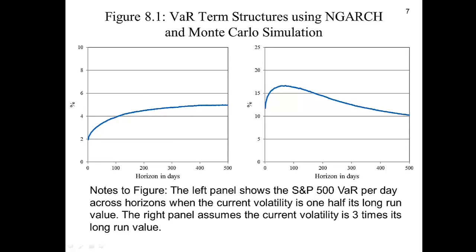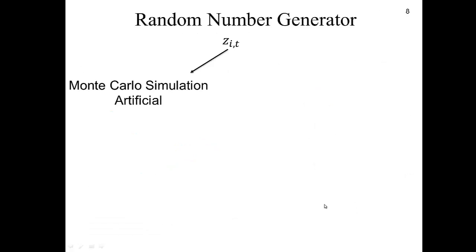These graphs show what this methodology produces. In the first graph, today's variance is half the long-run variance, hence the VaR will increase with the horizon. In the second graph, the initial variance is three times the long-run variance, hence the VaR will increase at the beginning and then decrease with the horizon.